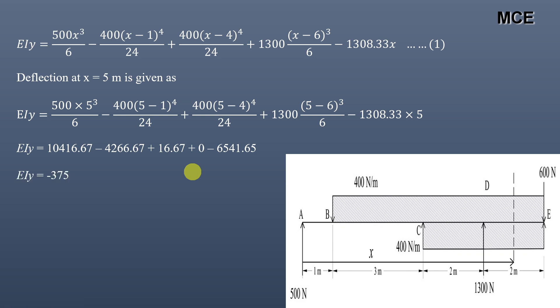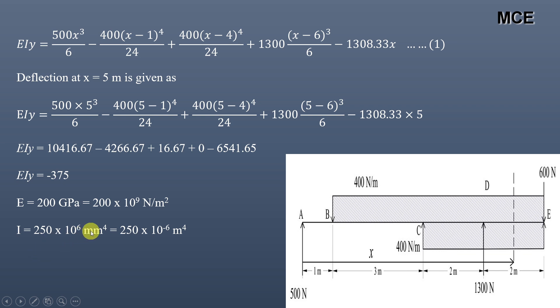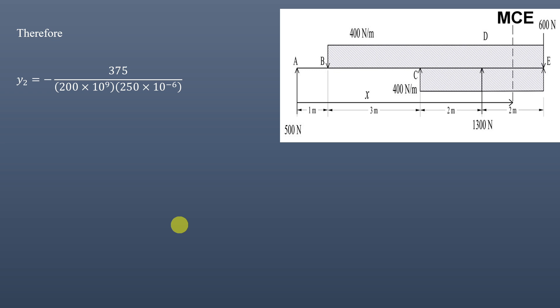Now substitute the values of E and I. E = 200 GPa = 200 × 10⁹ N/m². For I = 250 × 10⁶ mm⁴, convert to m⁴: I = 250 × 10⁻⁶ m⁴. Units of loading are in N and m, so E and I must be consistent. Calculating: y = −375 / (200 × 10⁹ × 250 × 10⁻⁶) = −7.5 × 10⁻⁶ m = −0.0075 mm. This is the deflection at x = 5 m from support A.